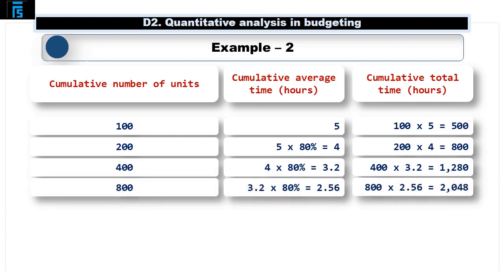Following this principle once more, we arrive at the 800 units required in the question. So now the cumulative average time taken to make a single unit will be 3.2 hours multiplied by 80%, 2.56 hours, and the cumulative total time will be 800 units multiplied by the 2.56 hours, so 2,048 hours. Whilst this process will continue to work indefinitely, it is a very long-winded process once you get beyond around 3 or 4 cumulations. So now we are going to look at a formula that can be used to speed this calculation process up.